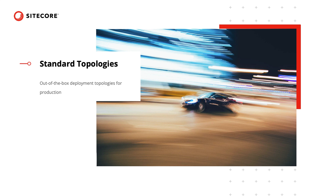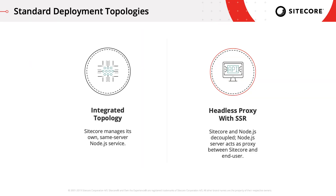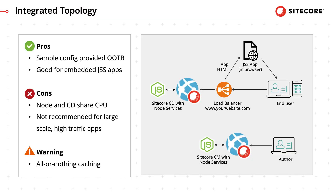First let's talk about the standard topologies that ship with JSS. The first is integrated mode where Sitecore manages its own same server node service. The second is headless proxy with server-side rendering where Sitecore and node are decoupled and the node server acts as a proxy between Sitecore and end users. In integrated topology, CD servers manage their own same server out-of-process pool node services to perform server-side rendering of JSS apps. Since the server is shared, the CPU resources are shared, and the node servers cannot be scaled separately.